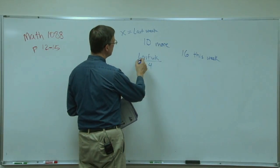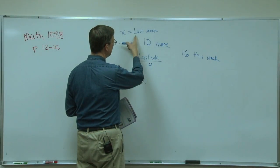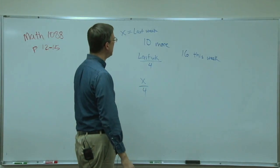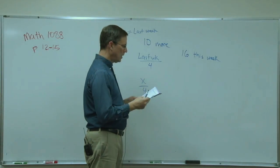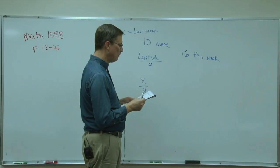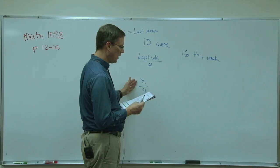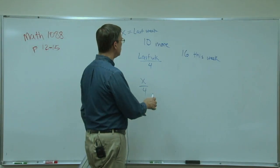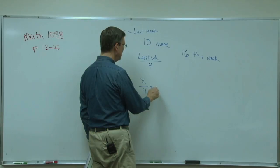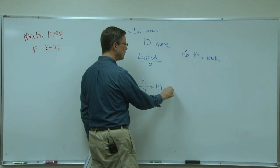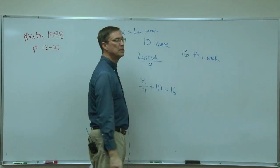So we're going to first take X, which is the number they visited last week, divide by four. And then it tells us that they visited 10 more church members this week than last week's number divided by four. So 10 more than this. So plus 10. Equals the number they visited this week, which they told us is 16.